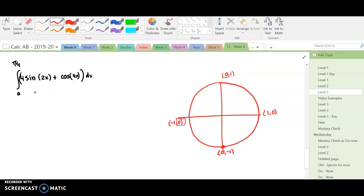In taking this definite integral, we're going to start with the antiderivatives. The antiderivative of sine is negative cosine, so we'll have negative 4 cosine of 2x over the derivative of the inner, which is 2.